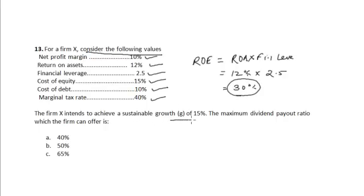Now if the firm intends to achieve a sustainable growth rate of 15%, the maximum dividend payout ratio which the firm can offer: the sustainable growth rate, that is g, is equal to the retention rate into ROE, and my retention rate will be given by 1 minus dividend payout ratio (DPR) into ROE.